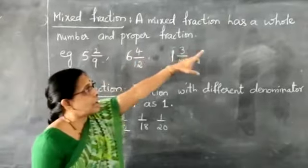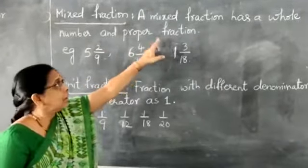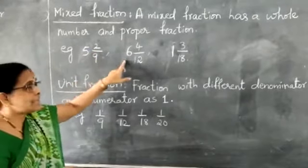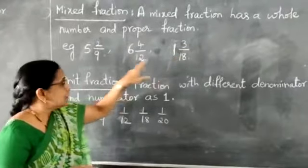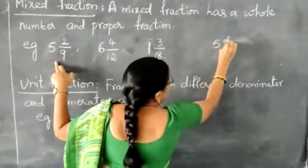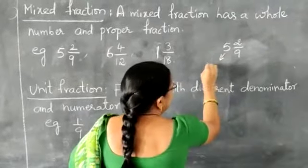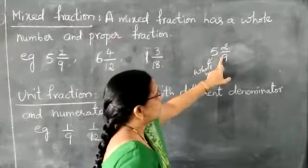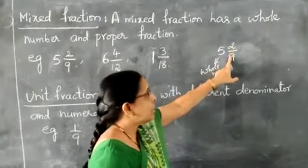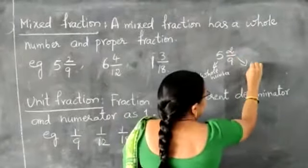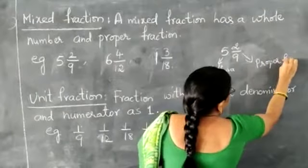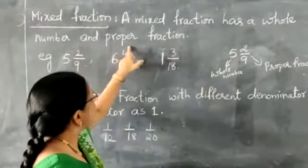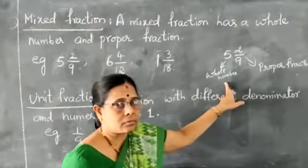Mixed fraction. A mixed fraction has a whole number and a proper fraction. For example: 5 and 2/9, 6 and 4/12, 1 and 3/18. Here, 5 is the whole number, and 2/9 is the proper fraction — numerator is less than denominator. Together, a whole number and proper fraction is called a mixed fraction.